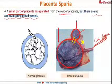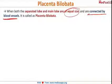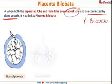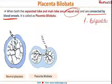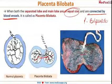The next type of placental abnormality is placenta bilobata. In this, the separated lobe and the main lobe are of equal size and connected by blood vessels, like placenta succenturiata. This type is also called placenta bipartite or placenta duplex. As seen in this diagram, in placenta bilobata both lobes are equal in size and connected by a leash of blood vessels.